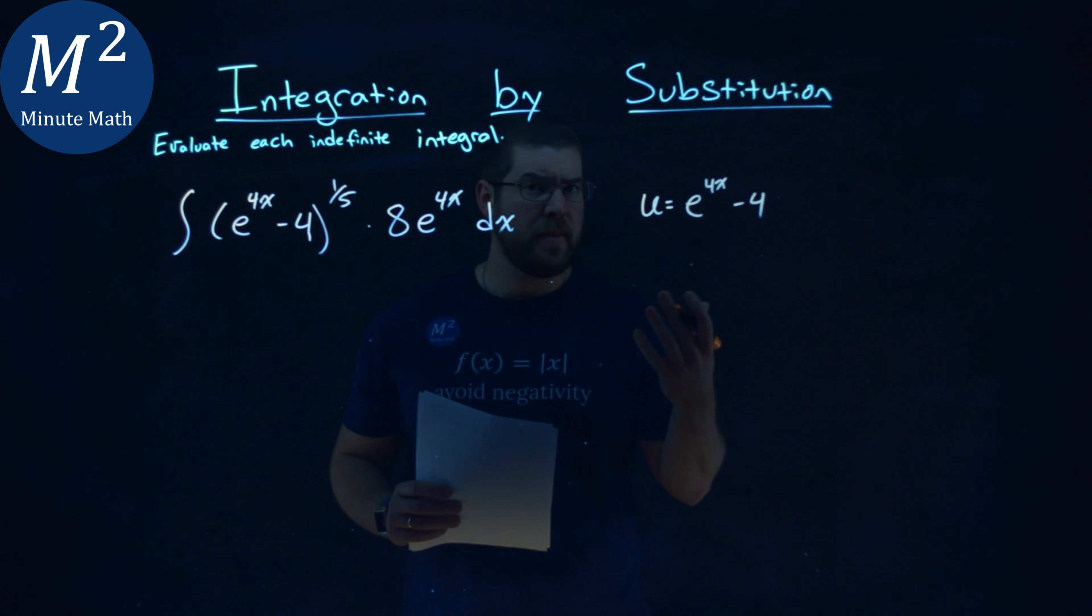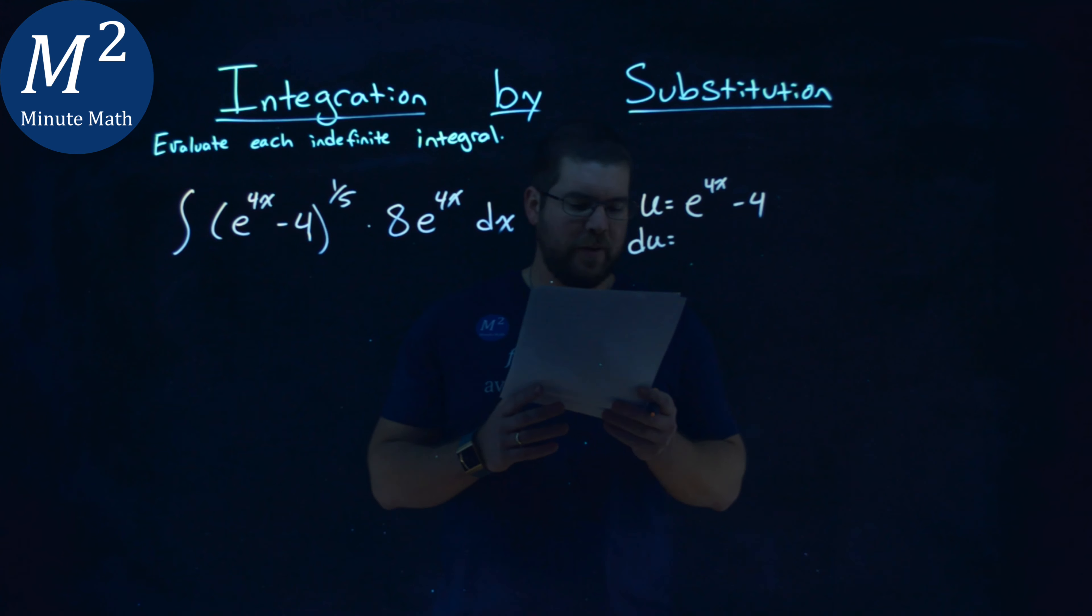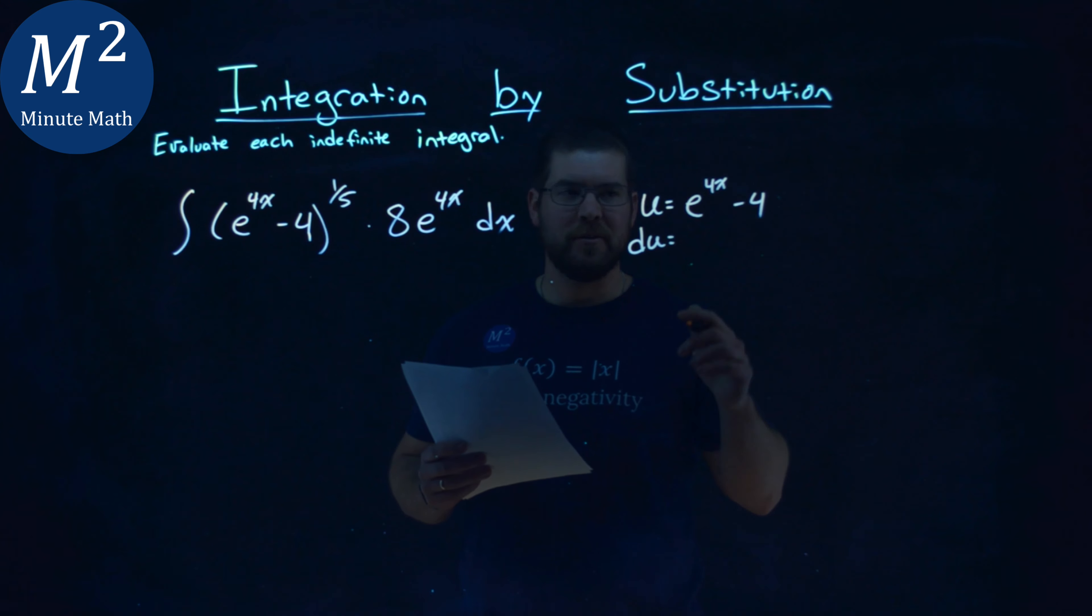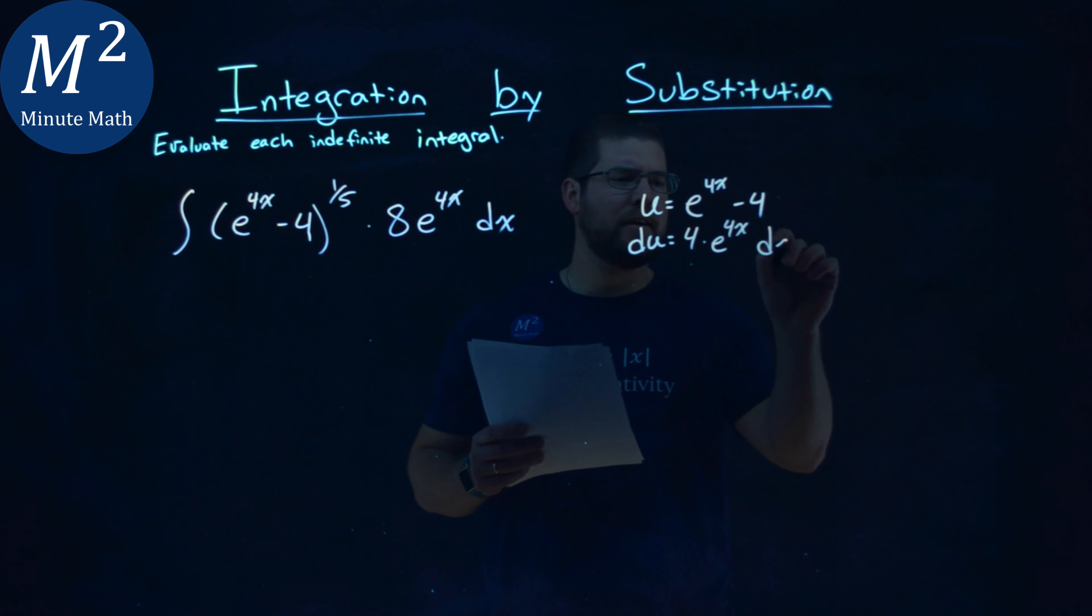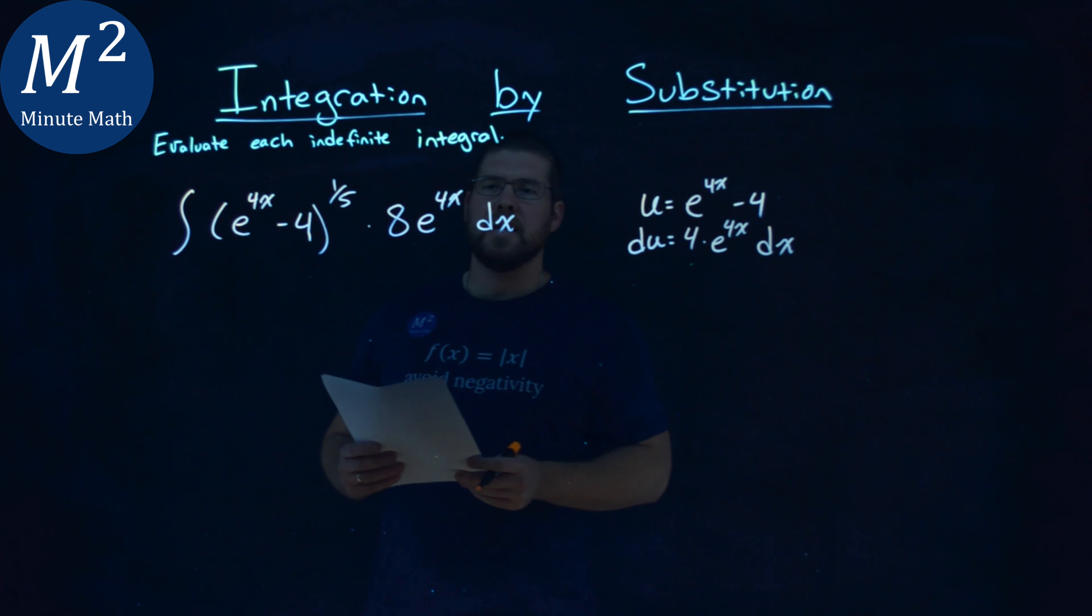So let's go find the derivative, du. Well, derivative of e to the u is u prime e to the u, so we have a derivative of 4x is 4 times e to the 4x power, and then derivative of minus a 4, well, it's just 0, and then we have dx here. Okay, not too bad.